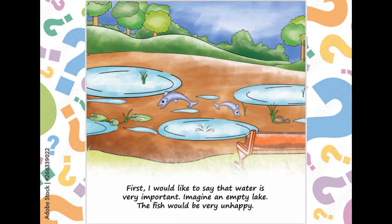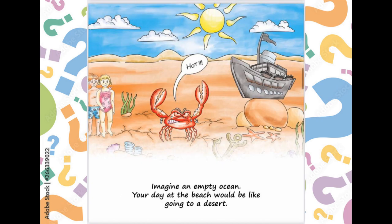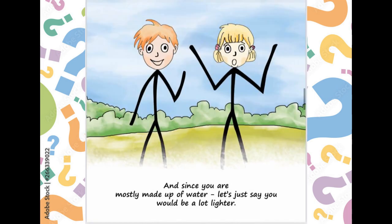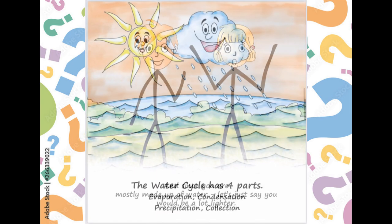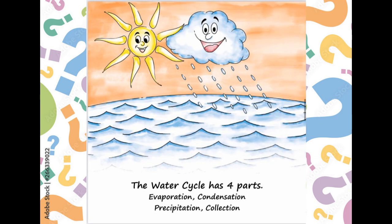First, I would like to say that water is very important. Imagine an empty lake — the fish would be very unhappy. Imagine an empty ocean — your day at the beach would be like going to a desert. And since you are mostly made up of water, let's just say you would be a lot lighter. The water cycle has four parts: evaporation, condensation, precipitation, collection.